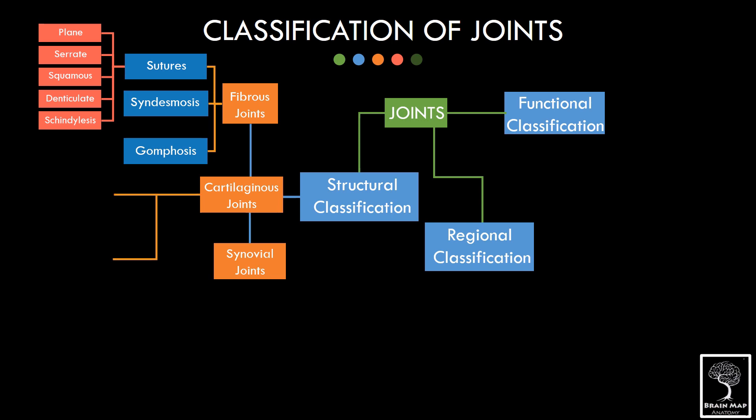Cartilaginous joints are of two types, primary and secondary. Primary cartilaginous are temporary joints which ossify at a later stage of life, seen between the epiphysis and diaphysis of growing long bones. They are also called synchondrosis. Secondary cartilaginous joints are also called symphysis as seen at the pubic symphysis.